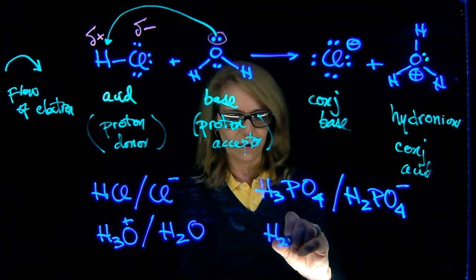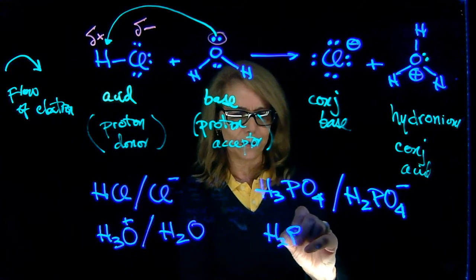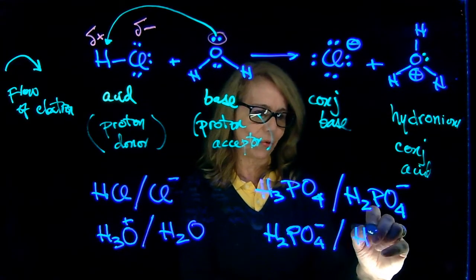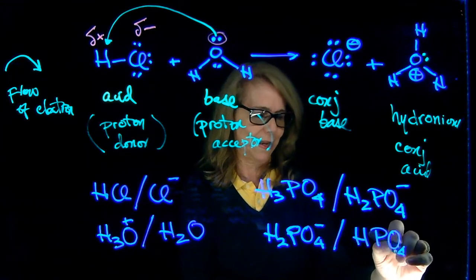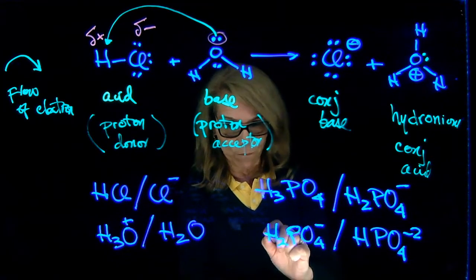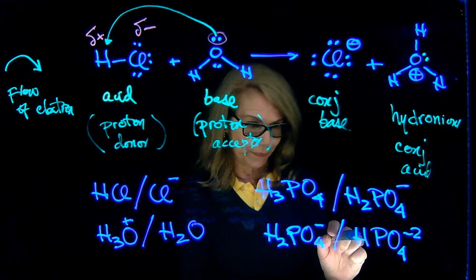And so here I have dihydrogen phosphate ionizing into hydrogen phosphate negative two. Now these two are related as conjugates. Here we have one more hydrogen, see one more proton back here.